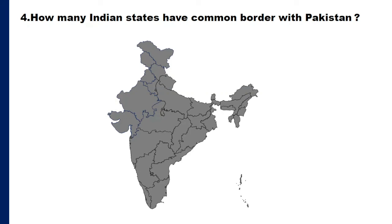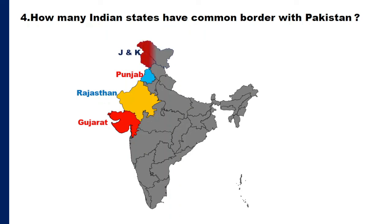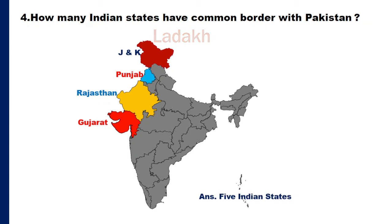Question number 4: how many Indian states have a common border with Pakistan? Before 2019 — that means before the division of Jammu and Kashmir into two union territories, Jammu & Kashmir and Ladakh — the number was 4. Presently, five Indian states share a common border with Pakistan. These are: Gujarat, Rajasthan, Punjab, Jammu & Kashmir, and Ladakh.